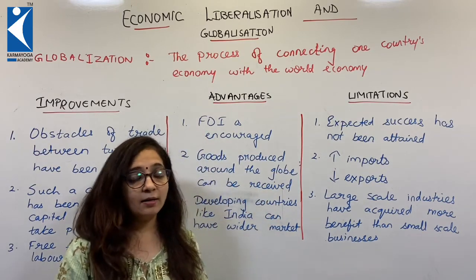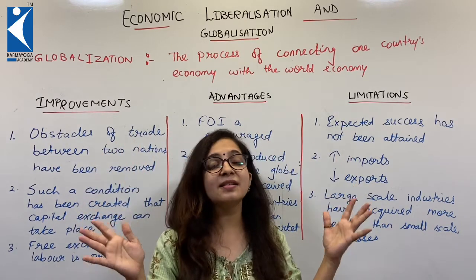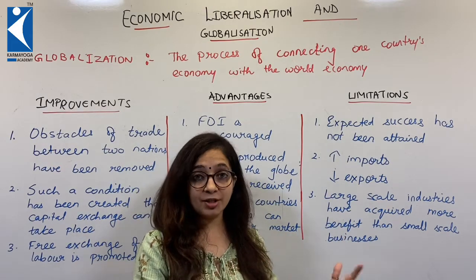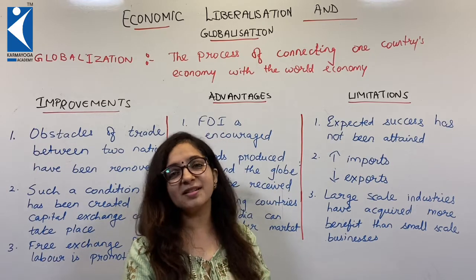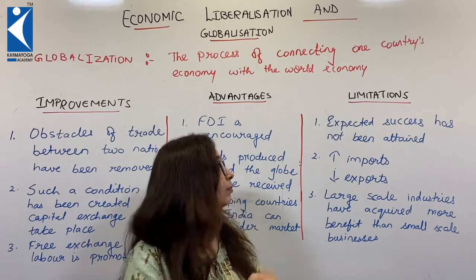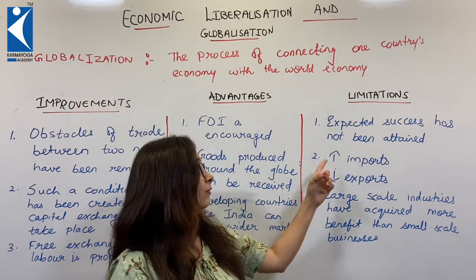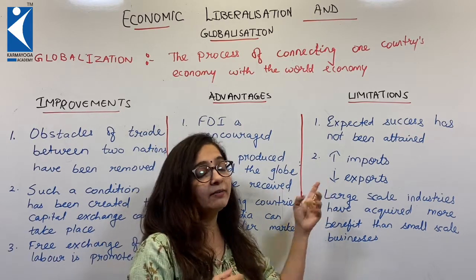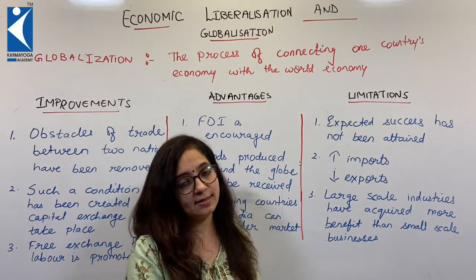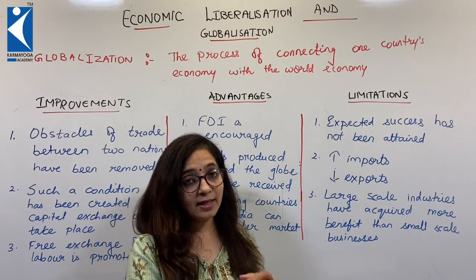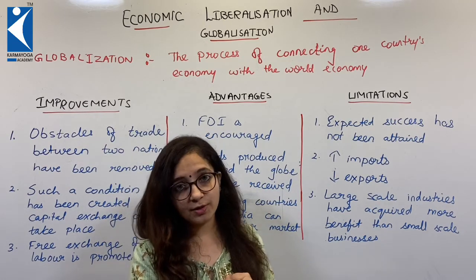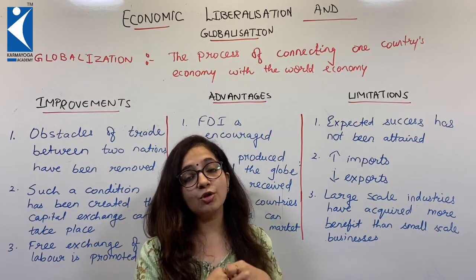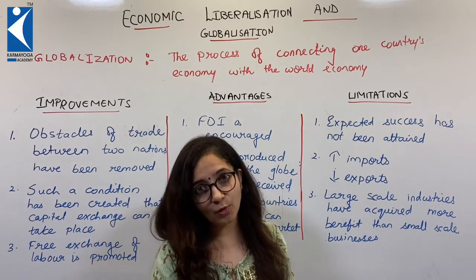The limitations are: whatever was planned and expected — that globalization would make a huge impact or work magic on our economy — such expected results could not come. Why? Because we took globalization the other way. We increased our imports and started buying all imported goods, but we cannot export more. Our exports are very less. This is the basic reason why there are unexpected results of globalization. It is our responsibility to push our country's economy by exporting more goods.